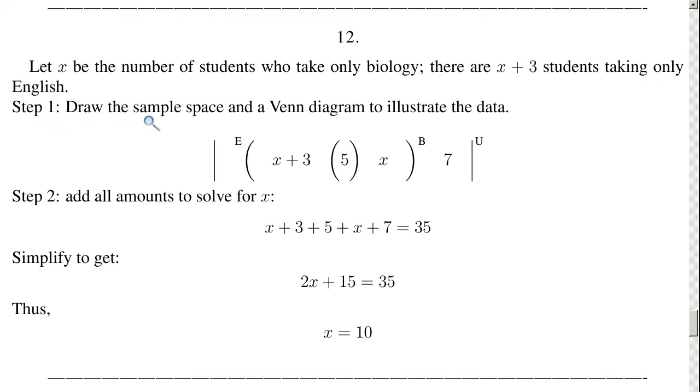Step 1: Draw the sample space and a Venn diagram to illustrate the data. So that's what we did. We have 5 students in here who take both English and Biology. We have 7 students out here who take neither. We have X who take only Biology. We have X plus 3 who take only English.